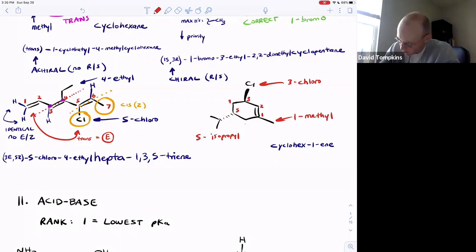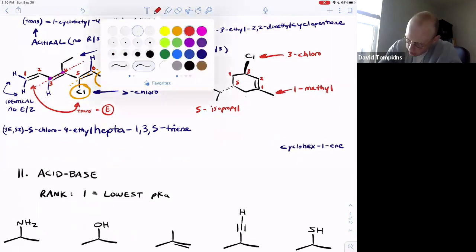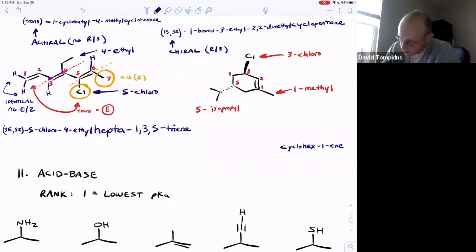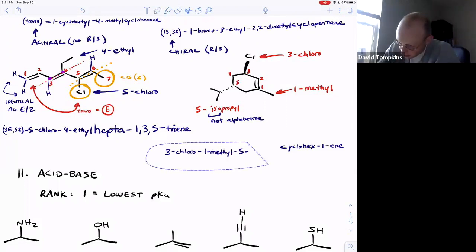So if you're going to put all these together, once again, just according to the alphabet, three-chloro. Once again, iso is technically not alphabetized. That's probably a really minute rule that you may not need to worry about. But it's alphabetized according to propyl. So it comes after methyl. So we say 1-methyl-5-isopropyl-cyclohex-1-ene.